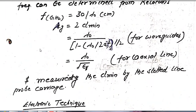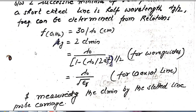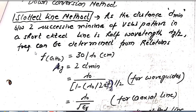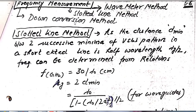As we know, frequency is nothing but c divided by λ0. So if we know λ0, we can calculate the frequency. This is how we calculate the frequency with the help of the slotted line section.